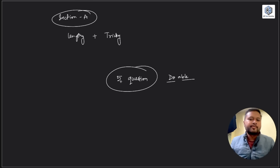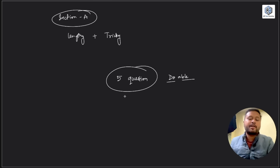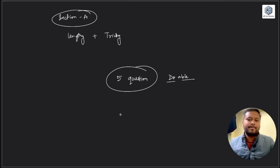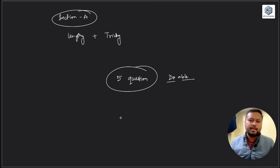Considering this as the average for the general audience — someone might have done seven, someone might have done two — taking five as the average for Section A. If you push your limits a little bit, you could even do 10 questions. The next video with all Section A solutions will be uploaded by tomorrow morning, so stay tuned.